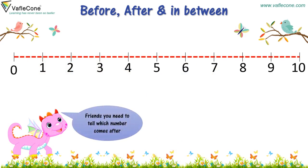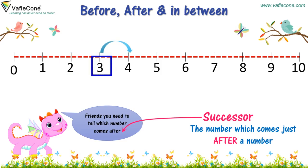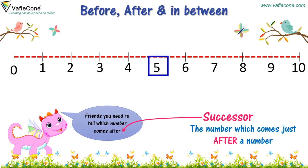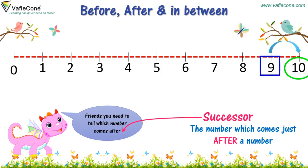Friends, you need to tell which number comes after. Two, three. Three, four. Four, five. Five, six. Six, seven. Seven, eight. Eight, nine. Nine, ten.